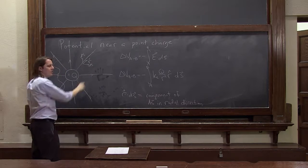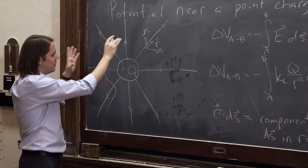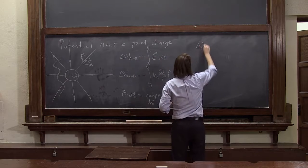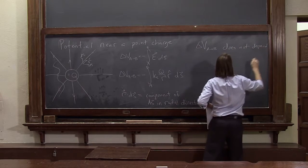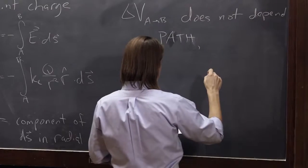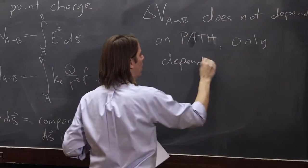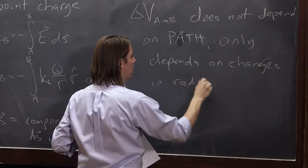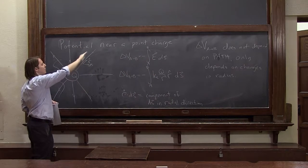In terms of potential, all that really matters is when you move along a field line — when you move out and go to a different electric field. If you move sideways, the potential is not going to change. So this is just picking off, of all these little steps, how much the radius is changing — how much your radius from the charge is changing. This tells us that delta V from a to b does not depend on path; it only depends on changes in the radius. And that's due to the symmetry of the system: it's a point charge, E field lines go out, and the E field only changes when you change radius.